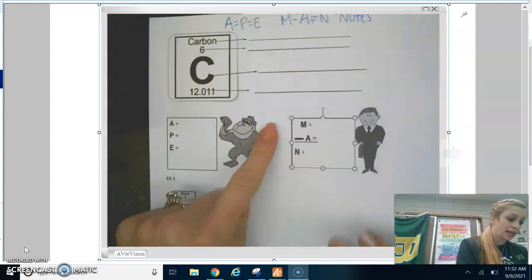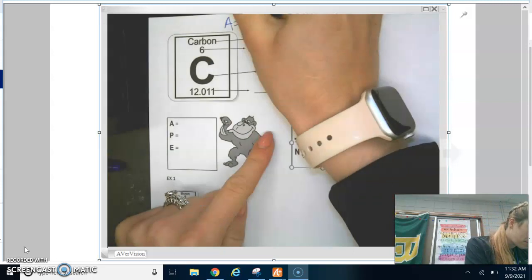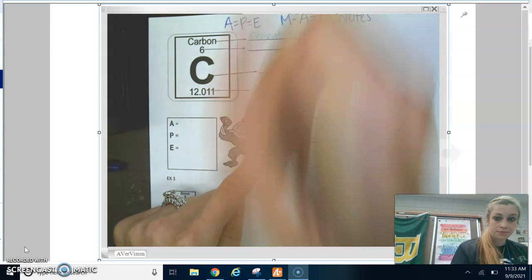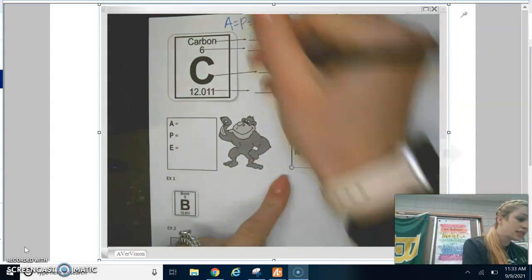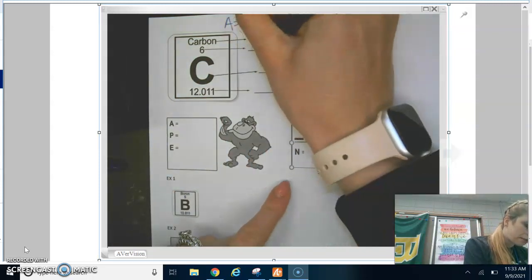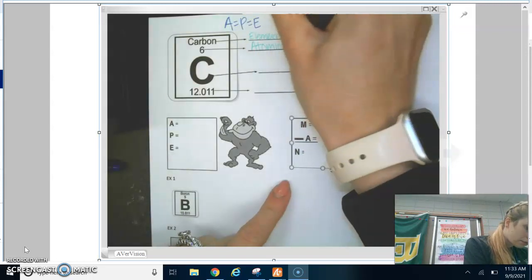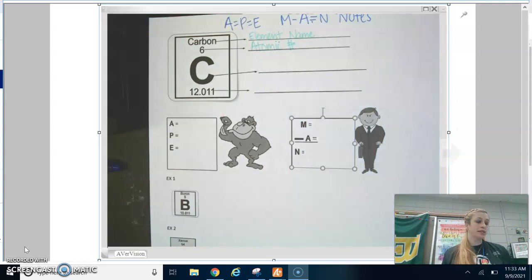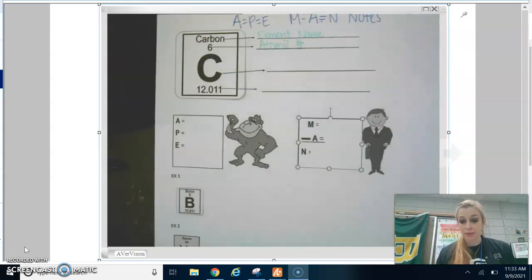So, carbon is the element name. Six is the atomic number. And if you stop and you look at your periodic table, what do you notice about the atomic number for each element? It's different. The atomic number for every element is different. No two elements have the same atomic number. So that's unique. It identifies the element.